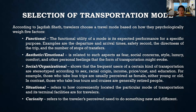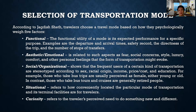Next is the social or organizational factor. It shows that frequent users of a certain kind of transportation are stereotyped according to sex, racial origin, income, price or cost, and education. For example, those who take bus trips are usually perceived as female, either young or old. In contrast, those who take bus tours and cruises are generally retired people.